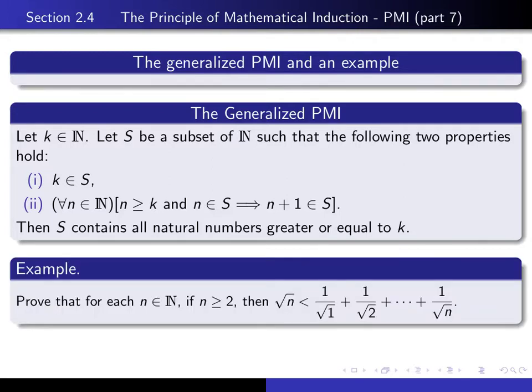Here's an example. We want to write a proof that for all natural numbers bigger than or equal to 2, the square root of N is smaller than this sum. Notice that this result is false if N equals 1, because the left-hand side is 1, the right-hand side has only one term, 1 over root 1, which is 1, and 1 is certainly not strictly less than 1.